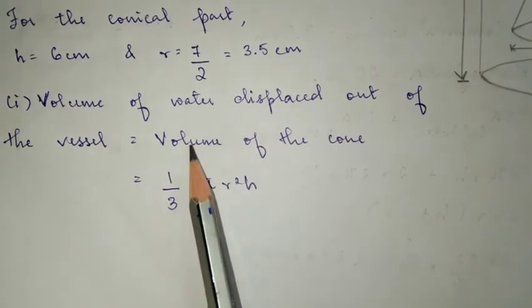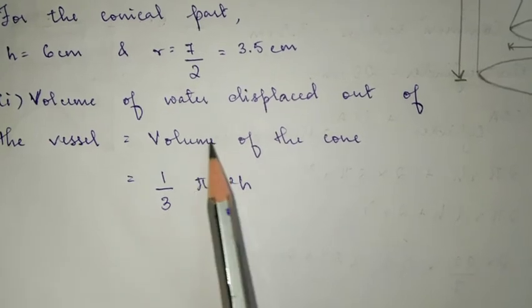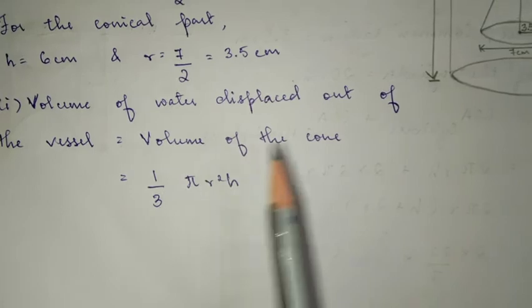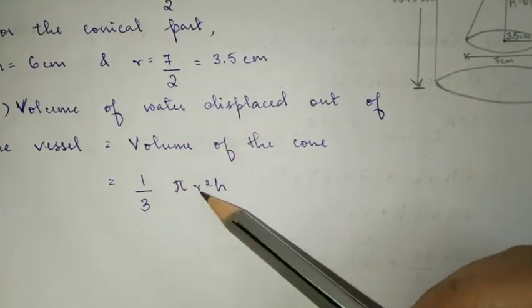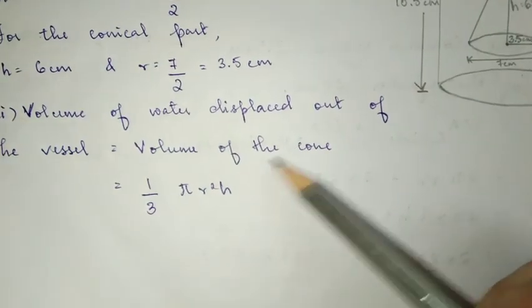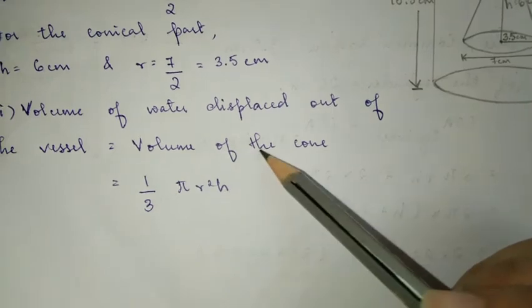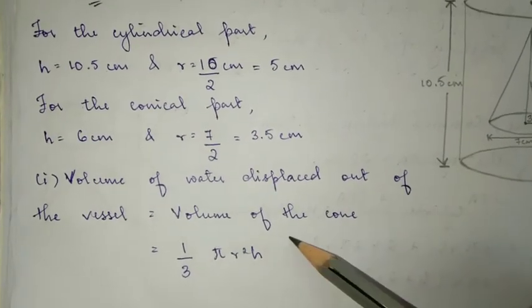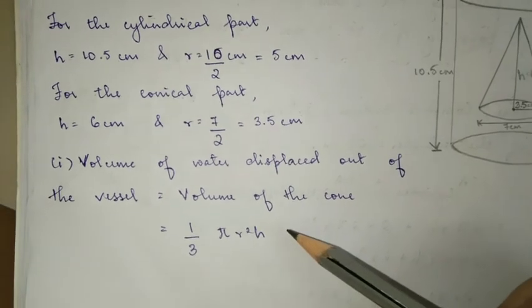So, volume of the cone, the formula is 1/3 π r² h. You substitute the numbers: the radius and height of the cone. So, you substitute these values and calculate the answer.